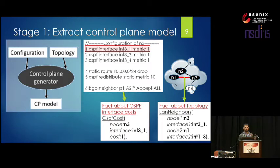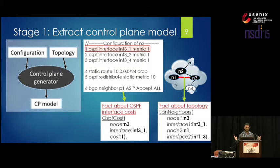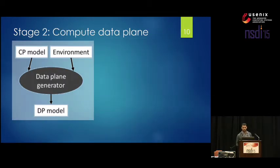A declarative model is comprised of relations. Here are some simple ones extracted from the configs and topology. At the bottom, you'll see the OSPF cost relation — one fact is extracted from the first line of the configuration, saying that you are running OSPF on interface int3.1 on N3 with a link cost of one. Similarly, an edge in the example topology produces a fact in the LAN neighbors relation, expressing the physical topology — for instance, that N3 is connected to N1 from N3.1 to N1.3. In addition to those simple relations, we also have derived relations produced by the data plane generator, which contains the rules for deriving those relations. This stage is the key contribution.